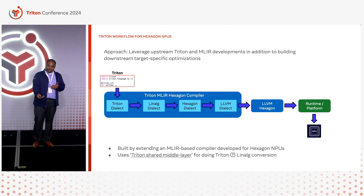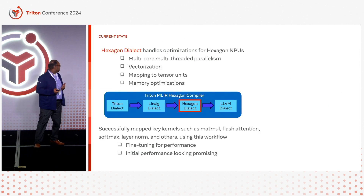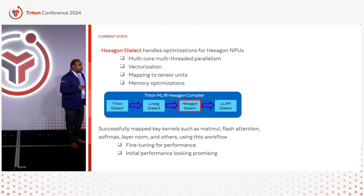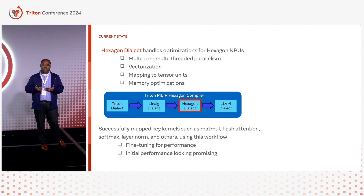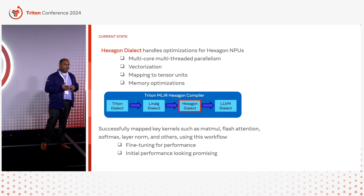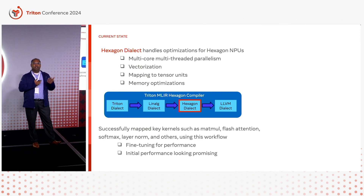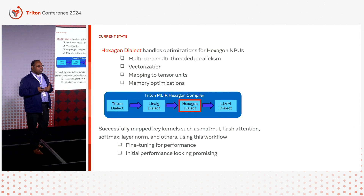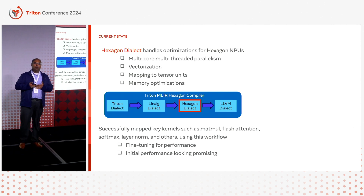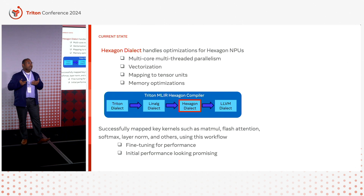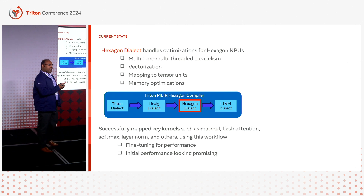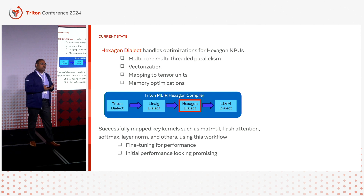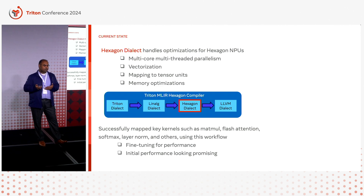The key piece in this end-to-end pipeline is the Hexagon dialect. This dialect handles the key optimizations needed for our target: multicode parallelism, multithreaded parallelism, vectorization, fusion, mapping to tensor units, various kinds of memory optimizations, and many more. We are not feature complete yet — it's still a work-in-progress product. We are trying to extend our workflow and build new features so that we can show more workloads end-to-end and show good results.